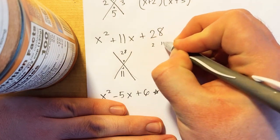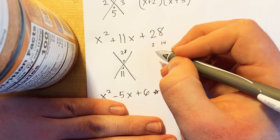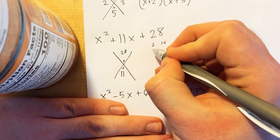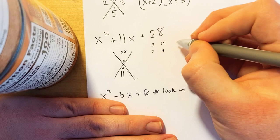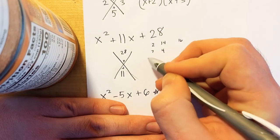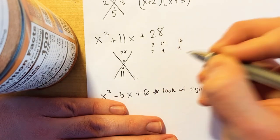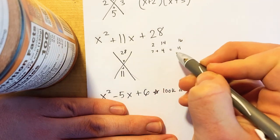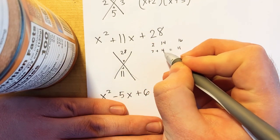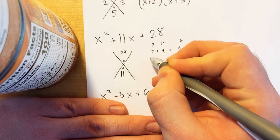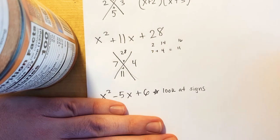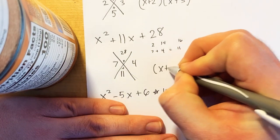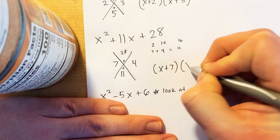You can do 2 and 14, or let's try 7 and 4. If we do 2 plus 14, that's 16 — nope. But 7 plus 4 is 11, so that's our answer. 7 plus 4 is 11 and 7 times 4 is 28. So we write 7 and 4 on the sides, and the answer is x plus 7, x plus 4.